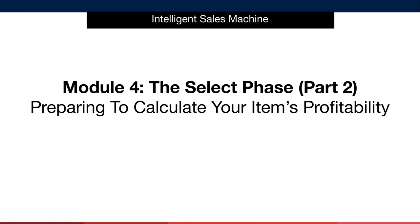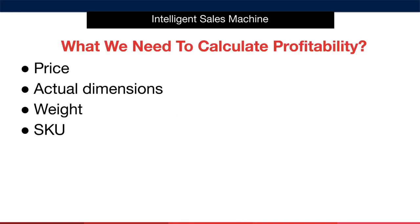Now we will look at the items we need to calculate our profitability. We call these our PAUSE, which stands for: P is price, A is actual dimensions, W is weight, and S stands for SKU. I'll explain each of these briefly, and then I will show you how to create your product SKU, as this is something we must create internally rather than receive from our supplier, like price, actual dimensions, and weight.